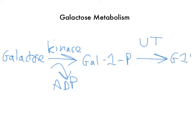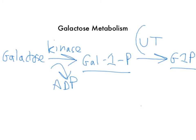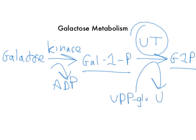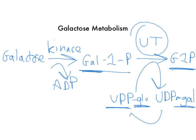Then it uses something called galactose-1-phosphate uridyltransferase, and from that it can make glucose-1-phosphate. The cell can really use glucose-1-phosphate for glycolysis or gluconeogenesis to make ATP. The way it converts galactose-1-phosphate to glucose-1-phosphate is by taking UDP-glucose and switching it with UDP-galactose — they essentially swap places. Then using an enzyme called 4-epimerase, we can get back to UDP-glucose. Additionally, if there's a lot of galactose in the cell, aldose reductase will create something called galactitol, which creates high osmotic pressure.